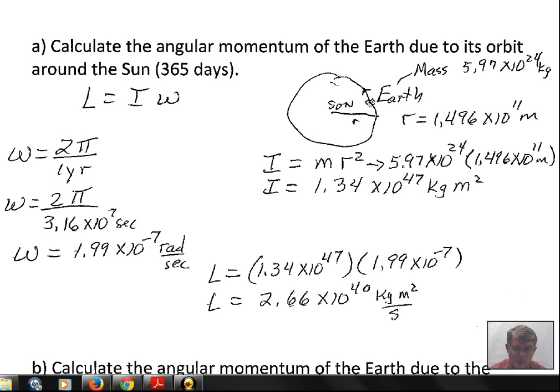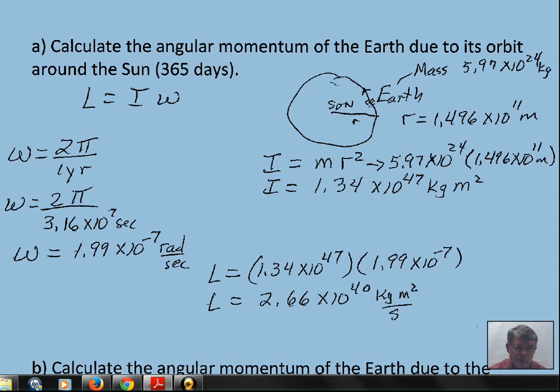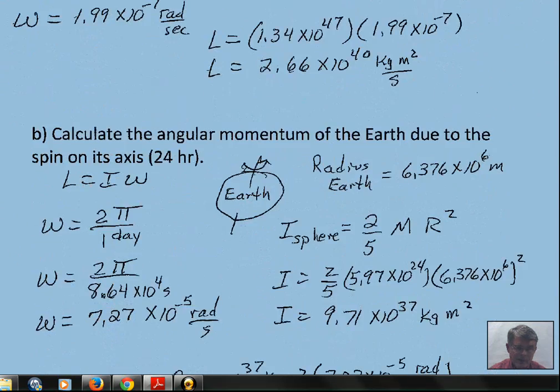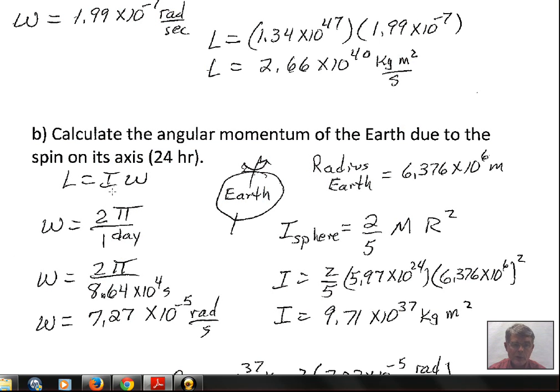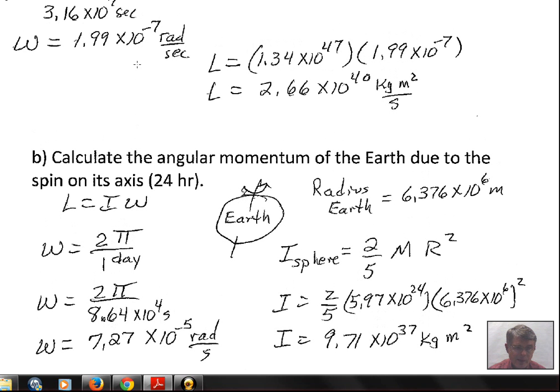And now the second part of the question is, how much angular momentum does the Earth have just due to its spinning on its axis? Well, again, angular momentum is rotational inertia times the angular velocity. We have a different angular velocity now. Now 2π radians in one day. And again, the conversion table can give you, provide you with the number of seconds in a day. Or go ahead and take 24 hours times 3,600 seconds in an hour. But 2π divided by the number of seconds in one day, and we find 7.27 times 10 to the minus 5 radians per second.